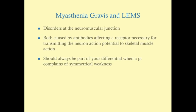This talk covers myasthenia gravis and Lambert-Eaton myasthenic syndrome. Both are disorders at the neuromuscular junction — where the terminal motor nerve meets the muscle — and both are caused by antibodies affecting receptors necessary for transmitting the nerve action potential to skeletal muscle. At some point the nerve has to tell the muscle to contract, and these diseases affect that ability.